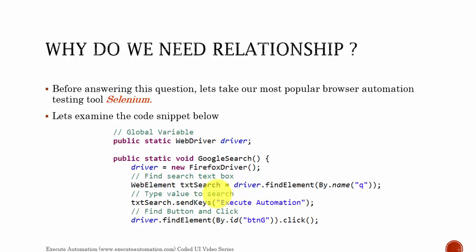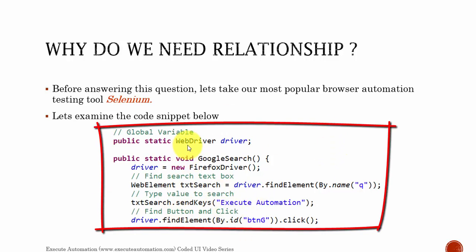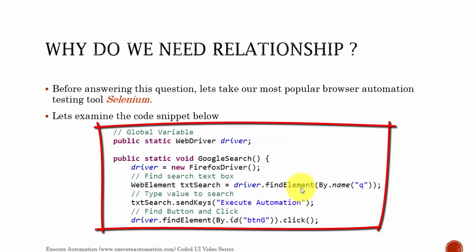What I'm going to do right now is show a simple code snippet I've created. You can see there is a WebDriver instance, and I have created a simple method. This code is written using Java. There is a driver instance variable and I'm creating a new FirefoxDriver. To identify a control, I'm using the same driver instance and using the findElement method to find the control by its name, storing it in the WebElement interface. Then I'm performing a sendKeys of 'exit automation' into that text box, and using the same driver instance to identify the button and perform a click operation.